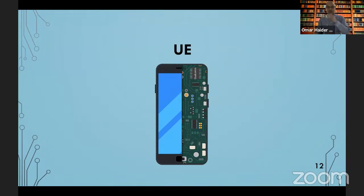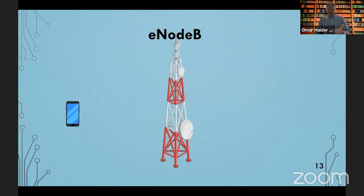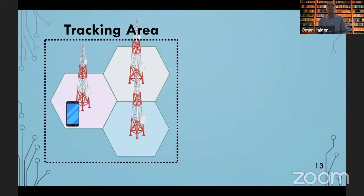For a cell phone to communicate with the core network, it relies on a base station. Base stations are trusted intermediaries that relay information from the cellular network to the core network. In cellular network terminology, a base station is called an E-Node-B. Each cell tower powers a hexagonal area, and a bunch of them, for administrative purposes, is called a tracking area.